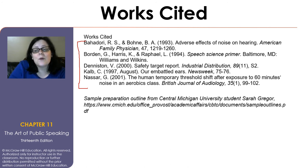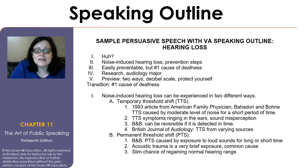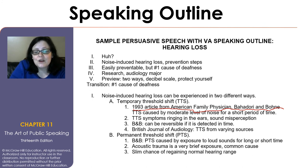Now that we know how to do a preparation outline, let's turn that preparation outline into a speaking outline. The speaking outline doesn't include labeling of sections because there's not enough space to note your introduction, your conclusion, and your body. You want to make sure that you include all facts and figures that it might be difficult for you to recall. For example, your speaking outline might want to say 'in a 1993 article from American Family Physician, Bedorian Bone,' because you want to make sure that you get that information right. But once you already have it, you'll just know that 'B&B' refers to Bedorian Bone.